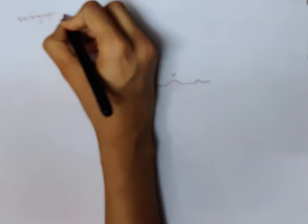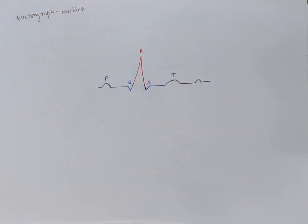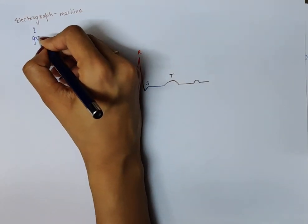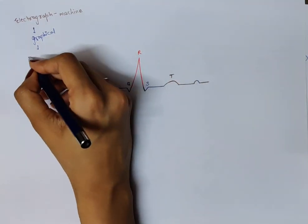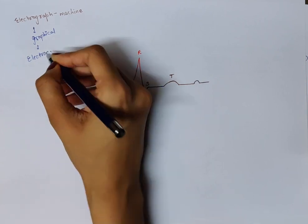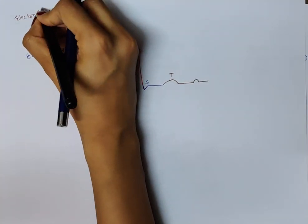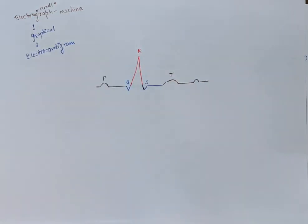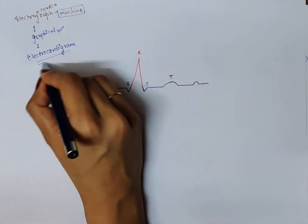Electrocardiograph is the machine. Whenever you have visited a hospital or seen in a movie, there is a machine which goes beep, beep, beep — that machine is the electrocardiograph. On it you see a graphical representation, like you are seeing on this paper. That graphical representation is also known as an electrocardiogram. So electrocardiograph is the machine on which this graphical representation is shown.